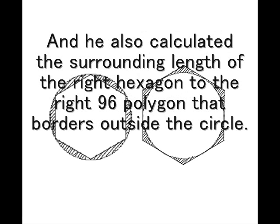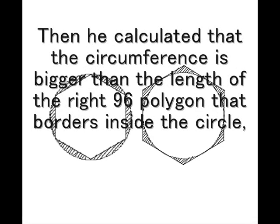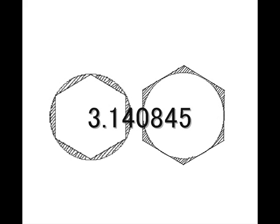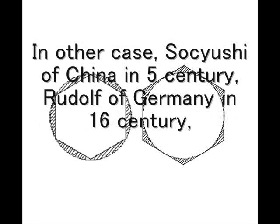He also calculated the surrounding length of the regular hexagon to the regular 96-polygon that borders outside the circle. Then he calculated that the circumference is bigger than the length of the inner regular 96-polygon, 3.140845, and smaller than the outer regular 96-polygon, 3.142857.